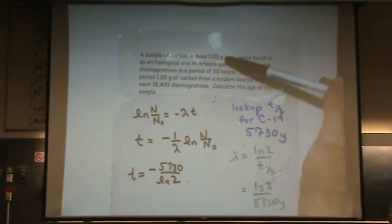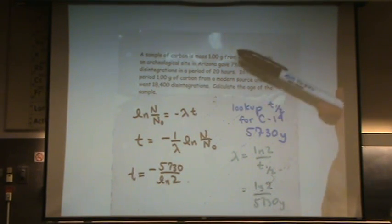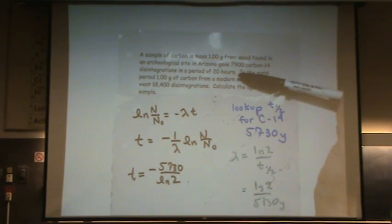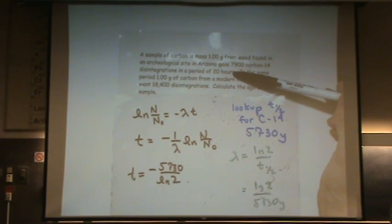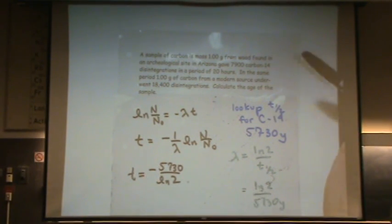What am I going to do with the one gram? It's irrelevant. It's only important to know that these two samples are the same size. What am I going to do with the 20 hours? Also somewhat irrelevant. If you wanted to divide 7,900 by 20 hours you could, but you're also dividing 8,400 over 20 hours, so it doesn't matter. That also you can forget about.